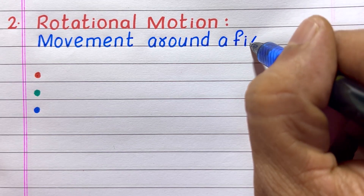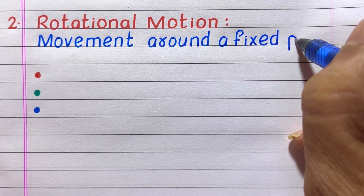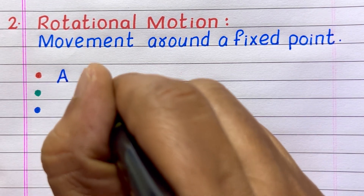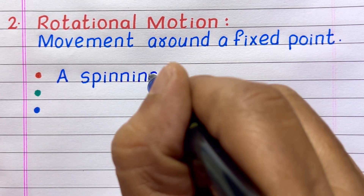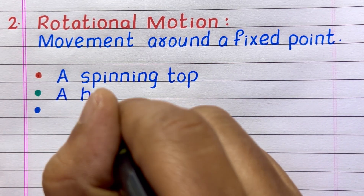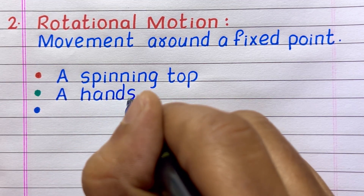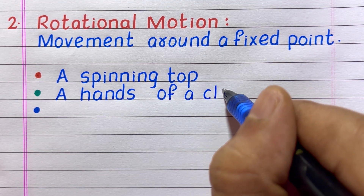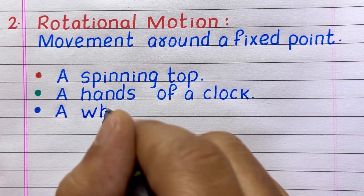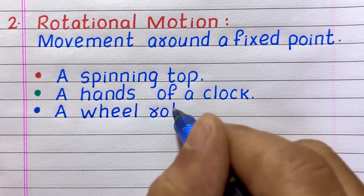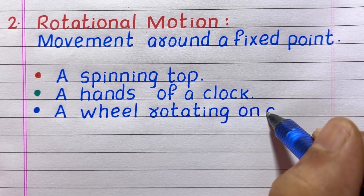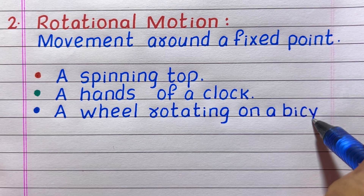The second type of motion is rotational motion. Rotational motion is a movement around a fixed point. Examples: first, a spinning top; second, the hands of a clock; third, a wheel rotating on a bicycle.